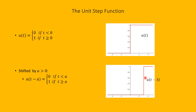For example, U of t minus 3 is zero until we get to 3, then suddenly it jumps up to one and stays one. The horizontal parts of the graph are the true function values; the vertical line segment connecting them is not actually part of the graph, though many software programs including SageMath connect those points with a line segment.